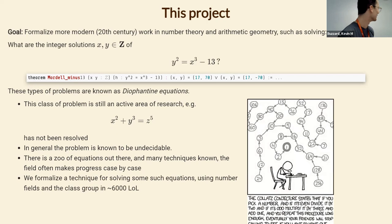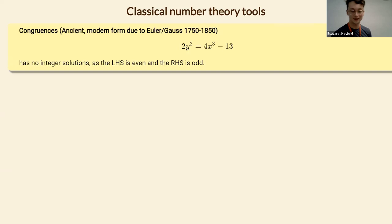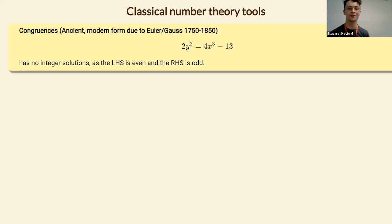Let's get into the classical methods first. Half my time is meant to explain the mathematics and half is for Lean. Let's start with the easy methods for solving Diophantine equations — things either known to the Greeks or at least known to Euler and Gauss, and more rigorously done by them. The first is congruences.